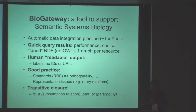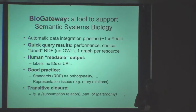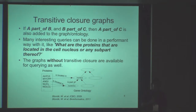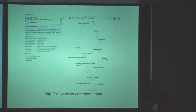We are also exploiting transitive closure, especially for is-a and part-of relations. We also combine those relations — for example, composing is-a and part-of together, which at the end generates an is-a. This enables queries like: what are the proteins located in the cell nucleus or any sub-part of it? Having this infrastructure already pre-computed means we can retrieve things that would not be easily found with a simple query.